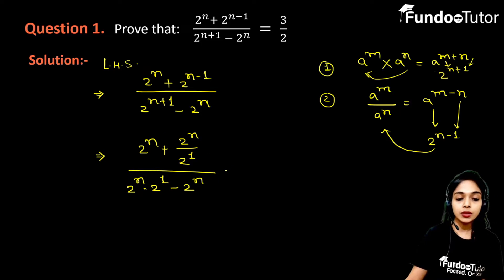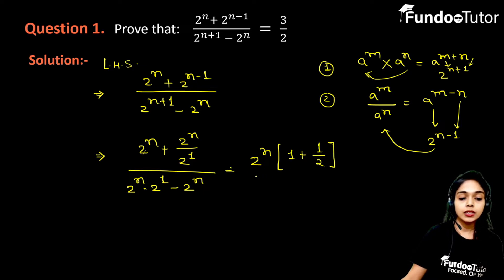We will simplify it. After simplification, you will see that 2 to the power n is common in the numerator, so take out this 2 to the power n common. The remaining number is 1 plus 1 by 2. Similarly, in the denominator, 2 to the power n is common. The remaining number is 2 minus 1.